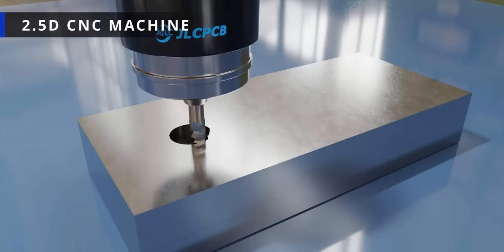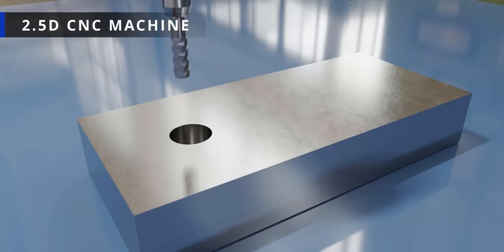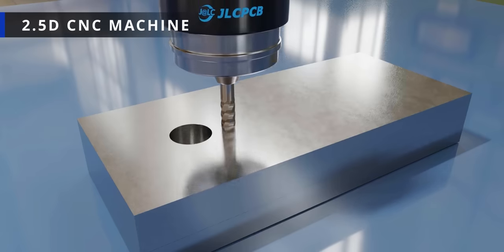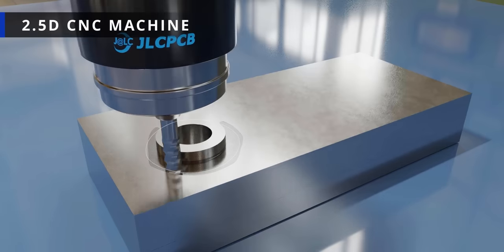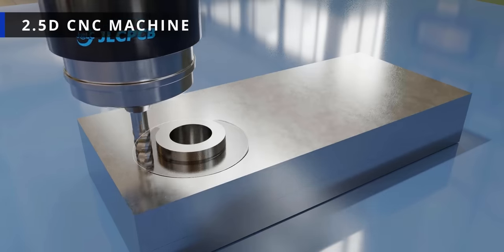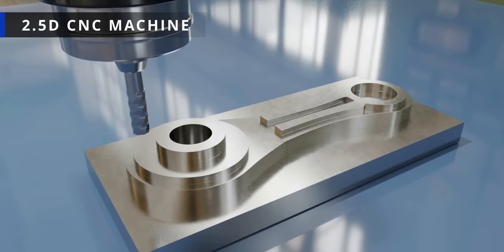This technique works for simple geometry. Such simplified machines with Z-direction movement are known as 2.5D CNC machines.